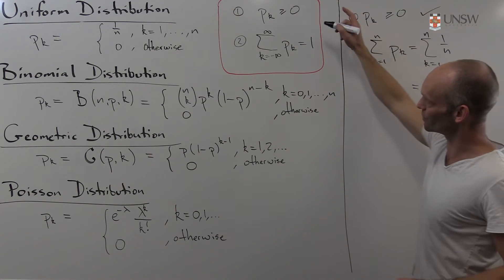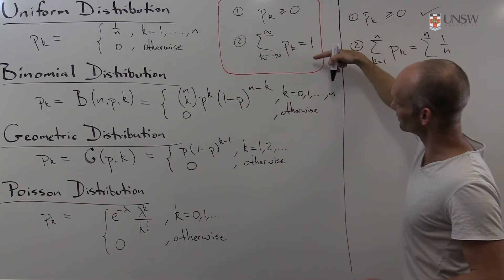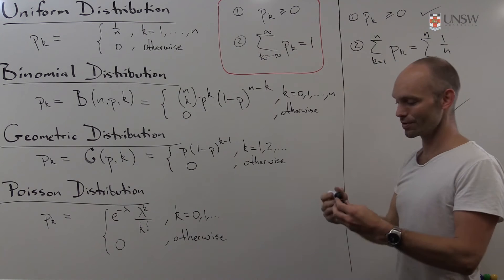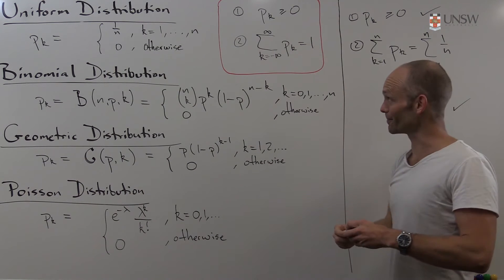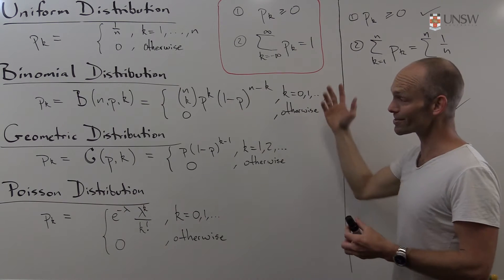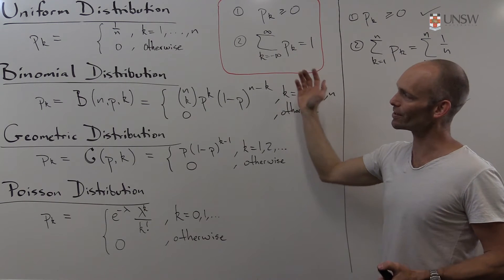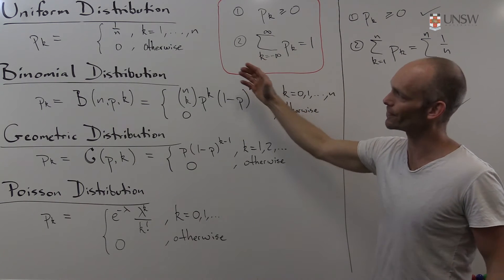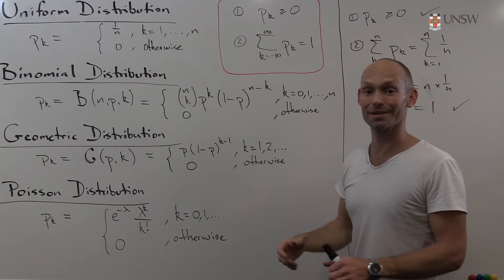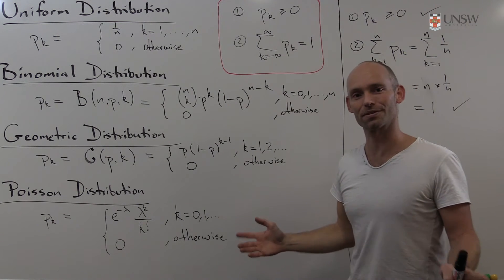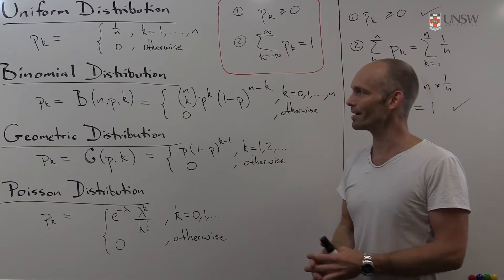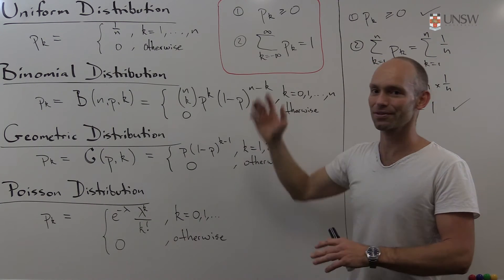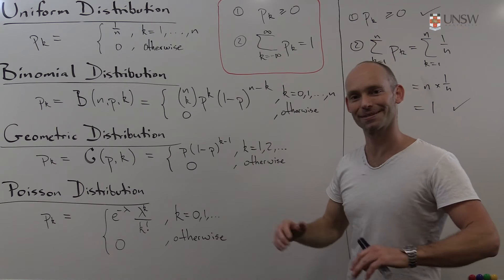We've now verified these two conditions. Apparently this uniform distribution function is indeed a probability distribution, and we're done with that.